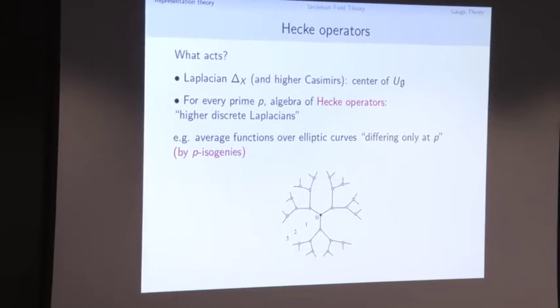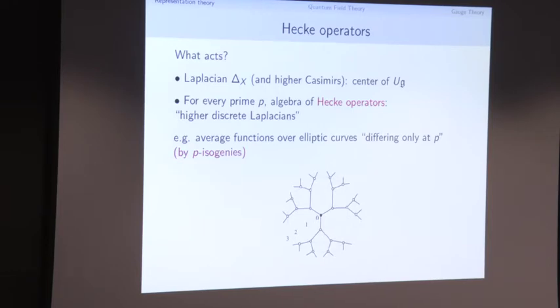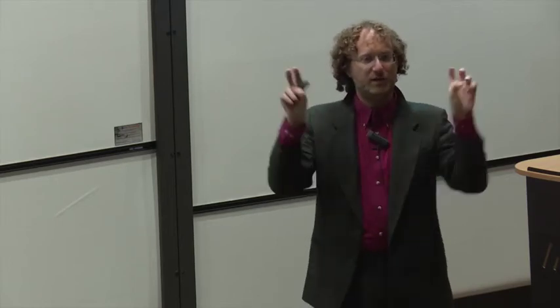I won't give the full definition of a Hecke operator, but you can think of it as a kind of discrete Laplace operator. For example, I could take a function on the space of elliptic curves and replace the value at a fixed elliptic curve by a weighted average over other elliptic curves that differ from it only at the prime p — elliptic curves that differ by a p-isogeny. A miraculous thing is that all these Hecke operators at almost all primes commute. So we have a gigantic family of commuting operators.